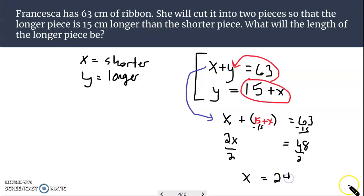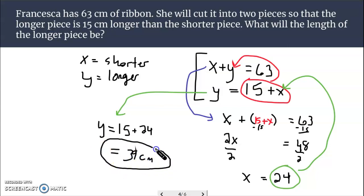Now that's the shorter piece. We want to know the length of the longer piece. We just need to resubstitute in this 24 right here. And we'll do that work right here. y, the longer piece, is equal to 15 plus 24. Comes out to be 39 centimeters. The longer piece is 39. Shorter piece is 24. They both add up to 63.